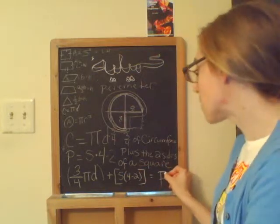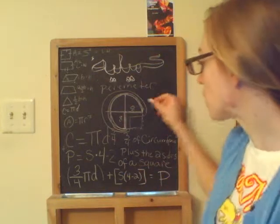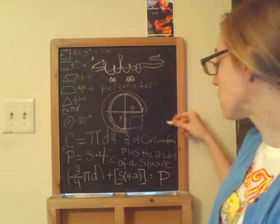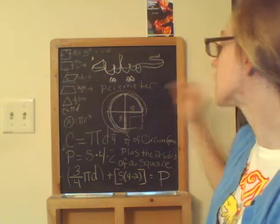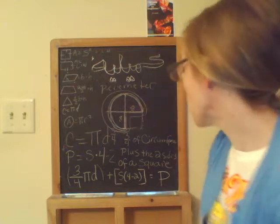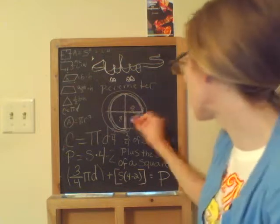So now to find the perimeter of this type of object, we add three-fourths of the circumference plus two sides of a square. This is a square cut in half.